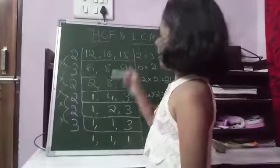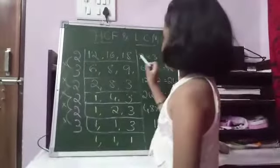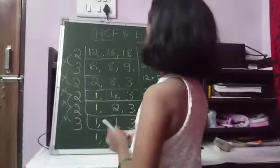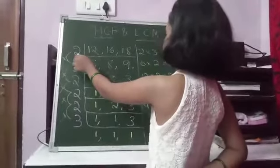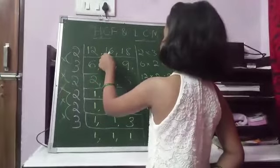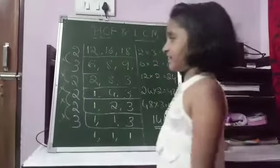12, 16 and 18 are all even numbers. So we are writing 2. See, 2 6s are 12, 2 8s are 16 and 2 9s are 18.